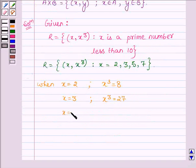And when x is equal to 5, then x³ is equal to 125. And when x is equal to 7, then x³ is equal to 343.